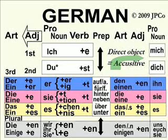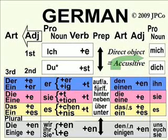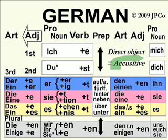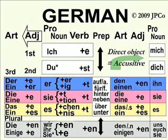Let's start with the accusative, direct object: 'I love you,' 'I take the train.' We have first, second, third person — I, you, he, she, it — ich, du, der, die, das. Plurals are always die. Contrary to popular belief and Mark Twain, the genders — he, she, it — are not associated with the meaning, but are associated with the sound of the word.